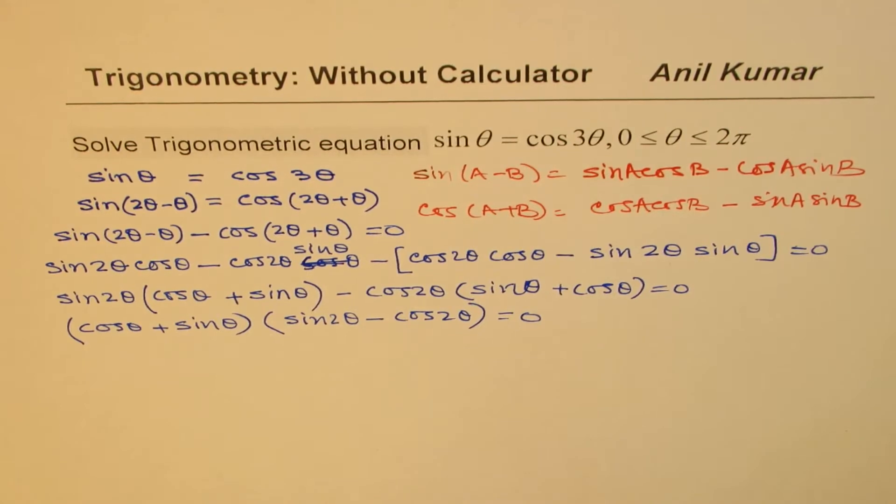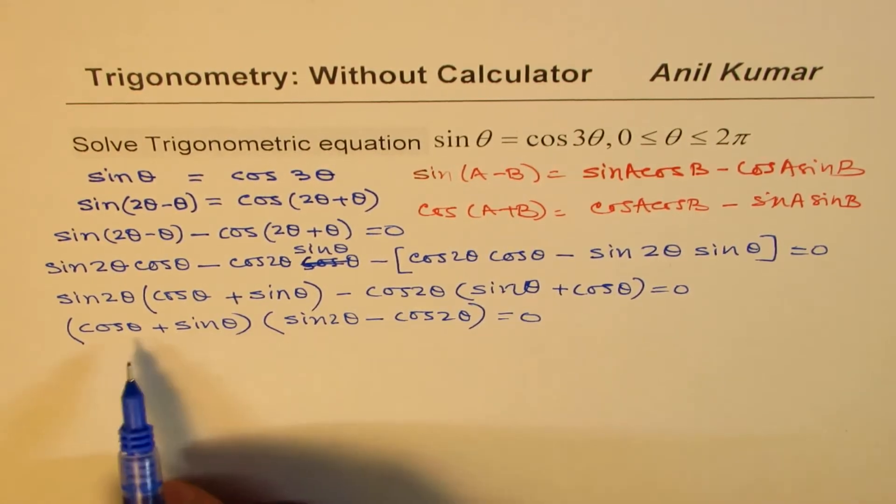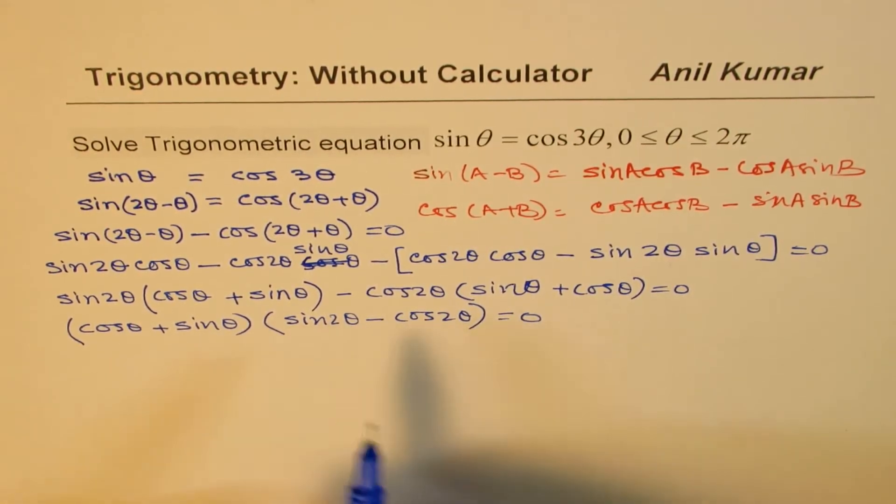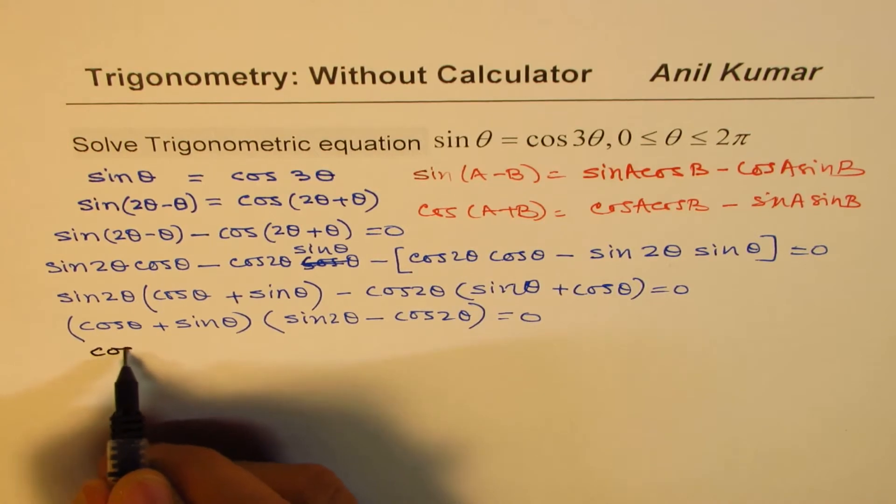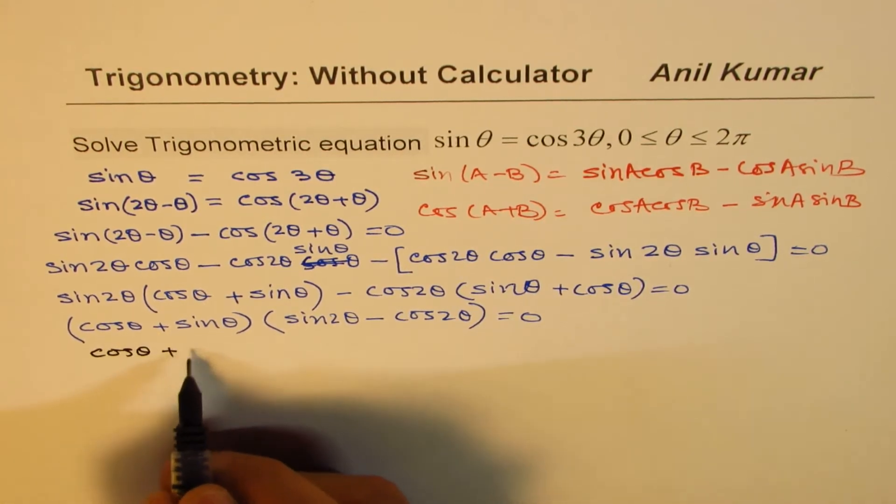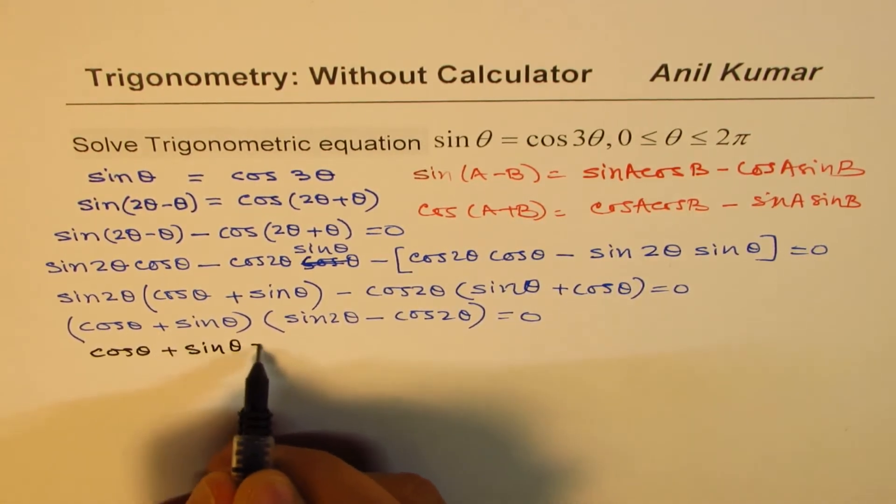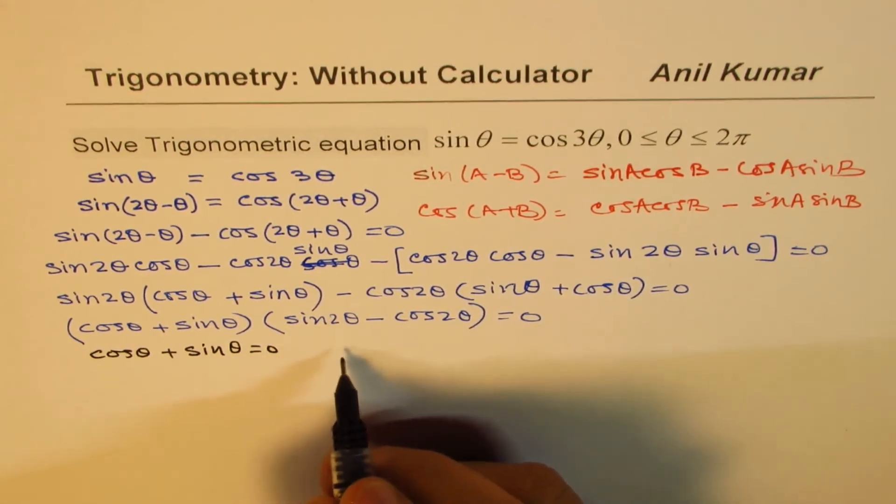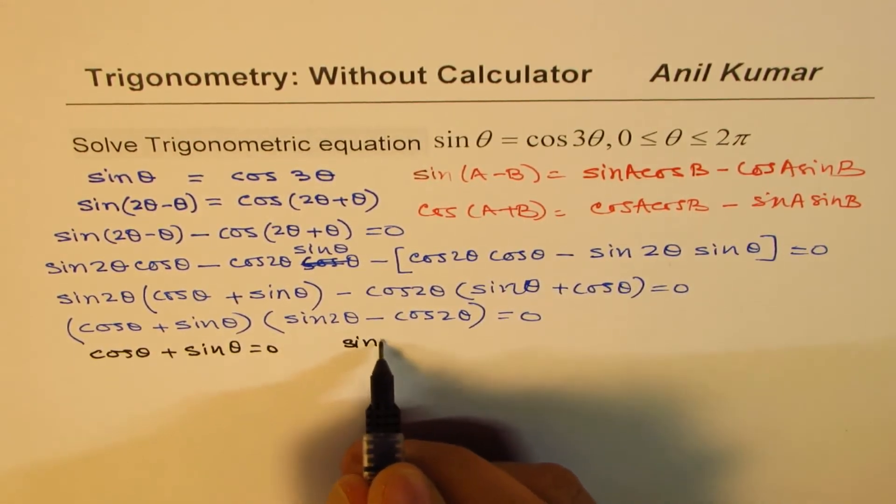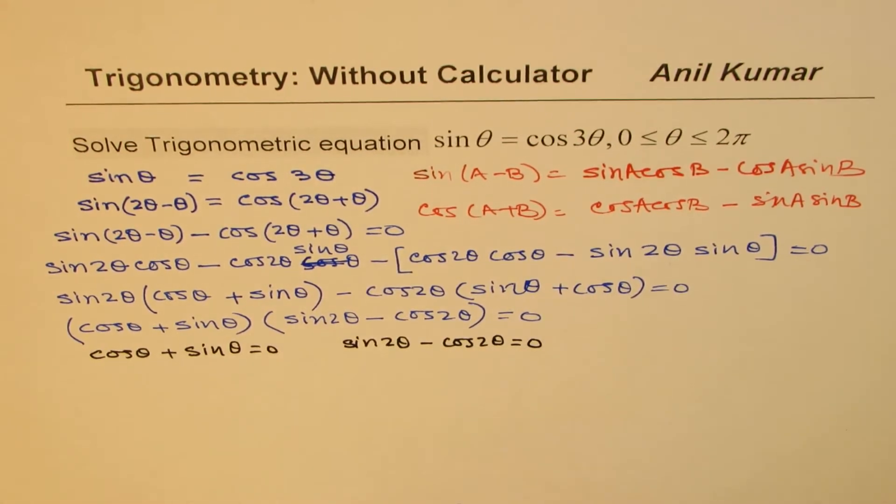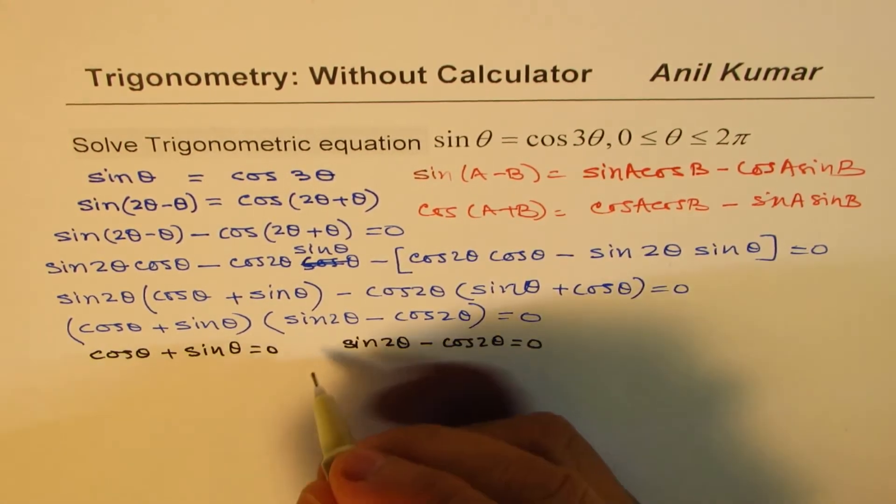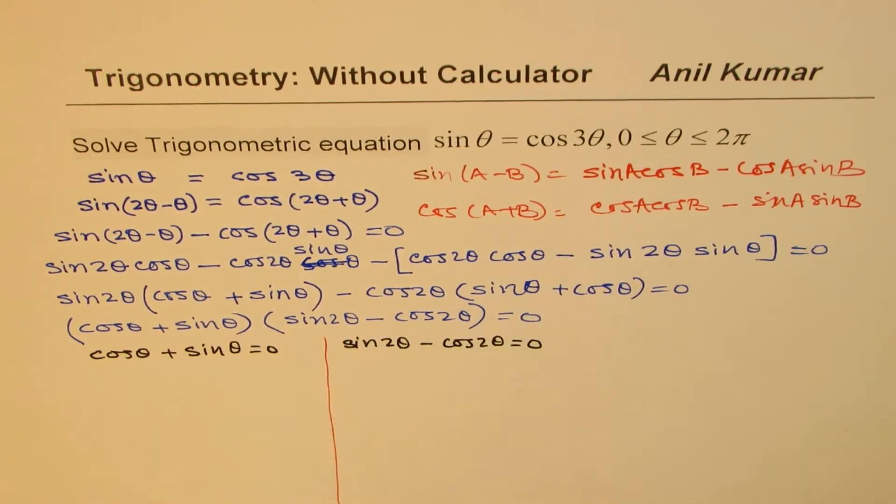So now we have cos theta plus sine theta factor is common, and we get sine 2 theta minus cos 2 theta equals 0. So one of the solutions could be cos theta plus sine theta equals 0. The other could be sine 2 theta minus cos 2 theta equals 0.